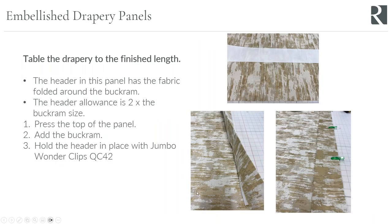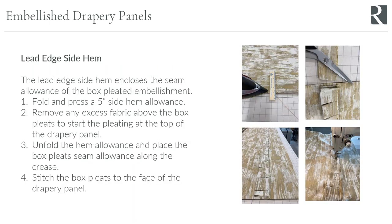Once that's done and you've closed the hem in your method of choice, you're ready to table the drapery for the finished length. I've got a four-inch buckram and I allowed eight inches to wrap the buckram twice. Just press the top of the panel, add the buckram, and hold the header closed with Jumbo Wonder Clips — much faster than using pins. Then the panel is tabled to the finished length with the buckram in the top hem and we're ready to insert the ruffle into the lead edge side hem.